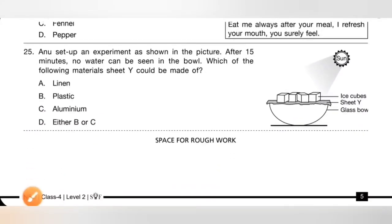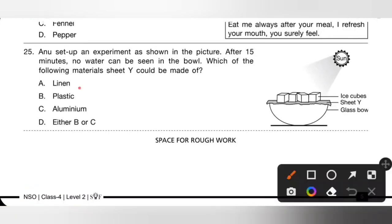Question 25: Anu set up an experiment as shown in the picture. After 15 minutes no water can be seen in the bowl. Which material could sheet Y be made of? Option A — linen — no. Option B — plastic — yes. Option C — aluminium — yes. The material can be made of either plastic or aluminium. Option D is the correct answer.